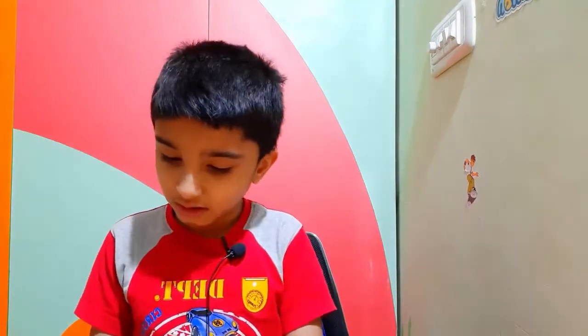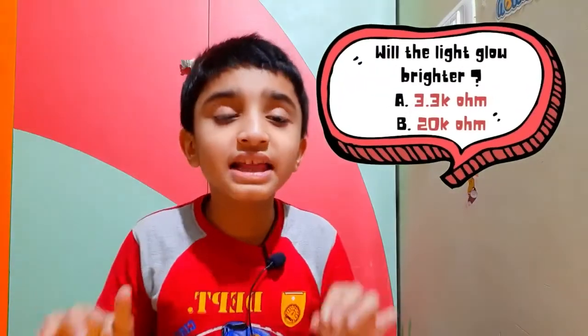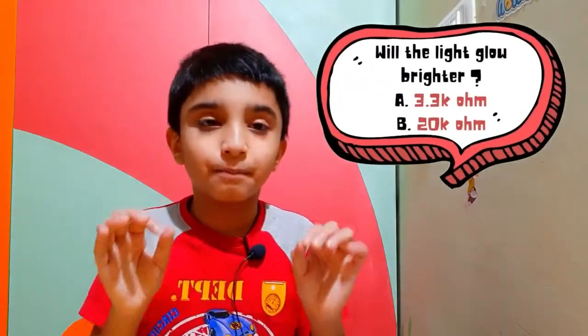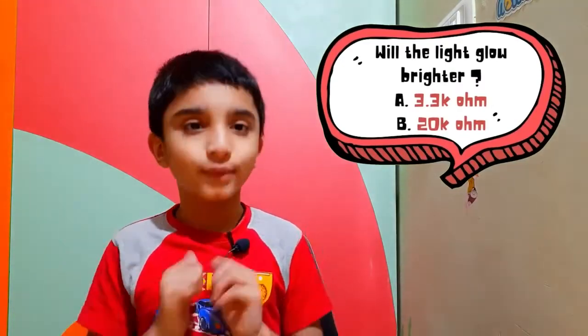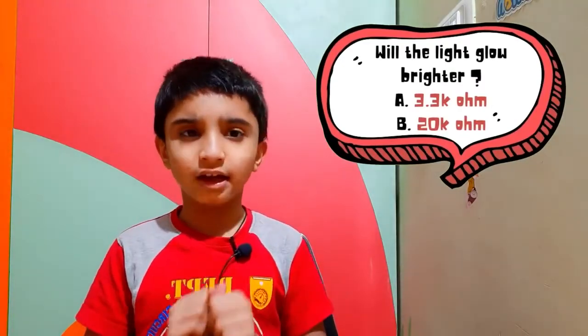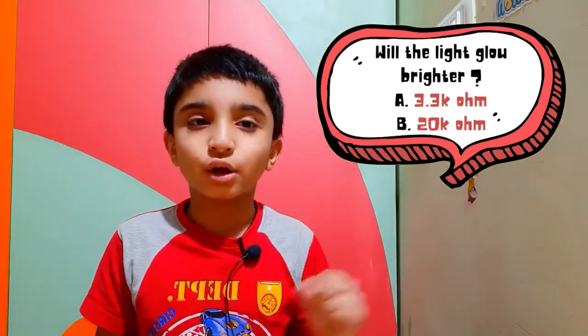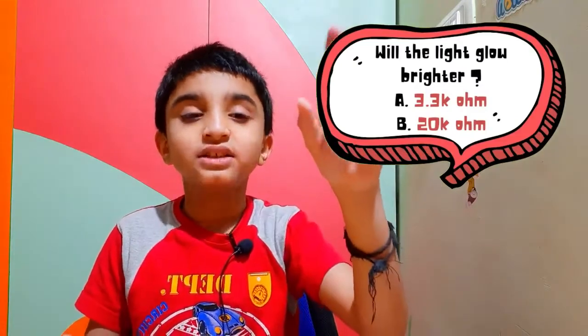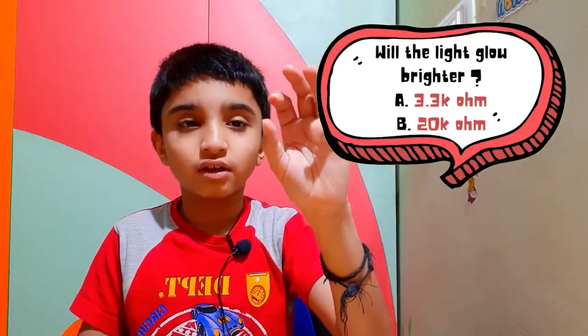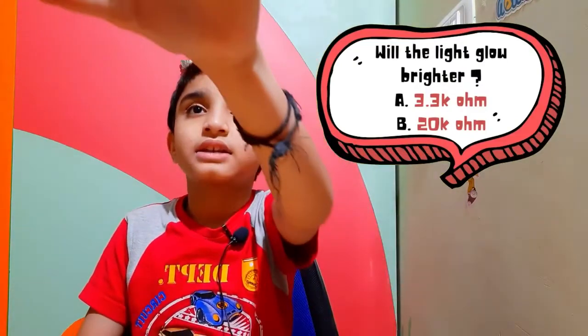Now we have seen that when we put a 3.3K resistor, the light is dull. But the question is: will the light be brighter when I put a 3.3K resistor or a 20K resistor? Hold on your thought and write it onto a paper. I'm giving you 5 seconds.